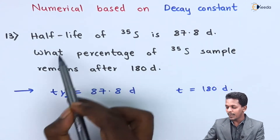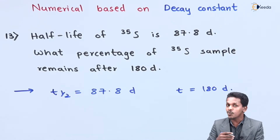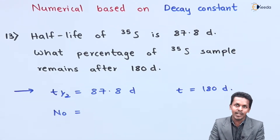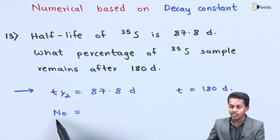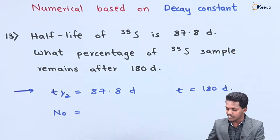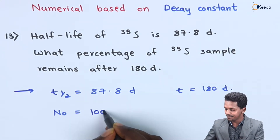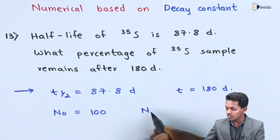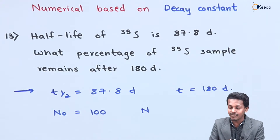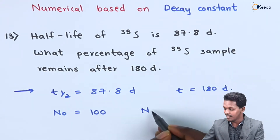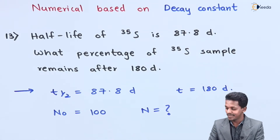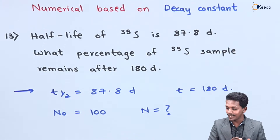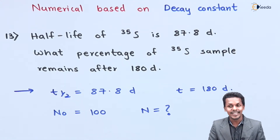Here the percentage is involved, so suppose we consider the initial number of nucleons N₀ to be 100. From that we have to estimate what is the value of N — the amount which has been left undecayed after 180 days. So we have to calculate the value of N, as we did in our previous topic.